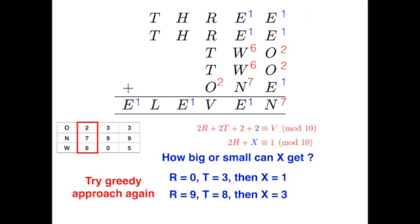To do this, we can try the greedy approach again. If we want to minimize the carryover, we let R and T be the smallest digits, which are yet unused, in this case 3 and 0, and see that we get 10 when we sum up 2R plus 2T plus 2 plus 2, upon which we can conclude that there's a carryover of 1, so X equals 1.